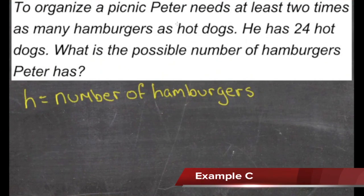To organize a picnic, Peter needs at least 2 times as many hamburgers as he has hot dogs. He has 24 hot dogs, what is the possible number of hamburgers Peter has? We're going to use h to represent the number of hamburgers.